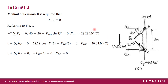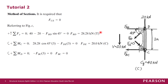With FCE = 0, we sum all total vertical forces equal to zero, taking upward as positive. We have 40 kN upward, 20 kN downward, and the vertical component of FBD downward: −FBD·sin45°. Since FCE is zero, its vertical component is also zero. Solving for FBD gives FBD = 28.28 kN, which is tension.